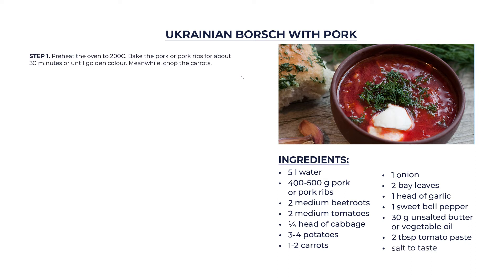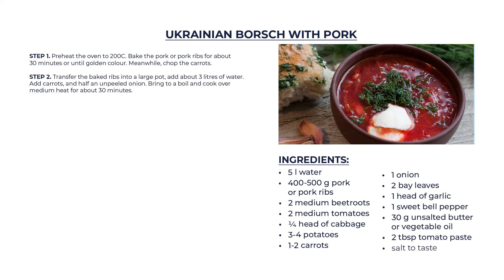Step 1: Preheat the oven to 200 degrees Celsius. Bake the pork or pork ribs for about 30 minutes or until golden color. Meanwhile, chop the carrots. Step 2: Transfer the baked ribs into a large pot. Add about 3 liters of water. Add carrots and half an unpeeled onion. Bring to a boil and cook over medium heat for about 30 minutes.